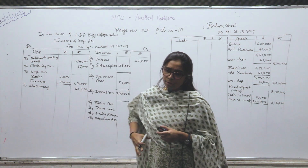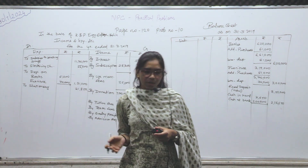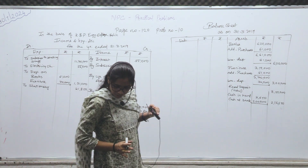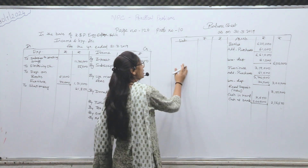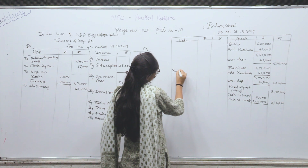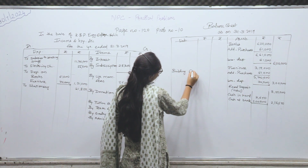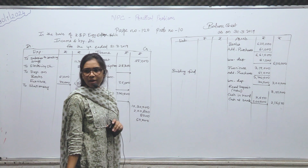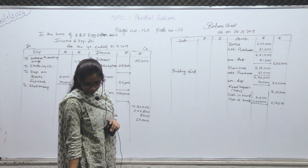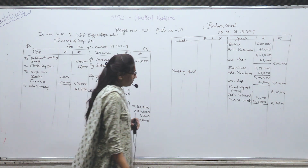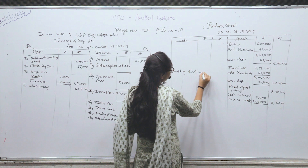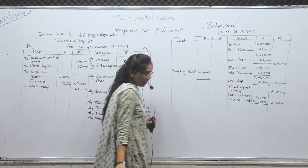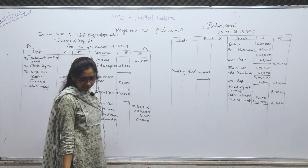Receipt payment account हो गया यहाँ पर complete। Additional information में जो चीज़ें दी रखी हैं उसे record कर लेते हैं। Books का recording कर लिया, furniture का recording कर लिया। Building fund — capital के लिए जगह छोड़ दो — नीचे लिखो। Building fund — adjustment है — amount inner column में: 10 lakh।